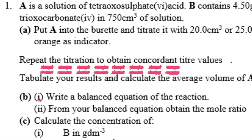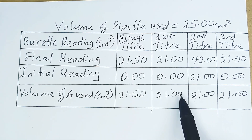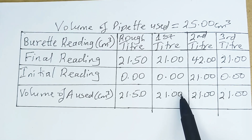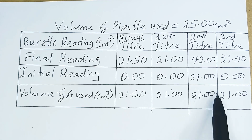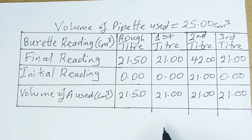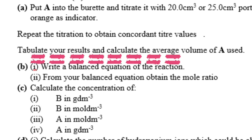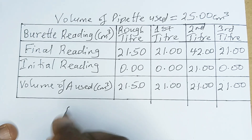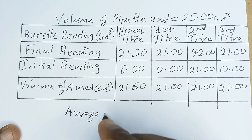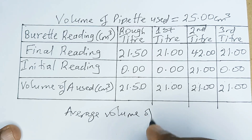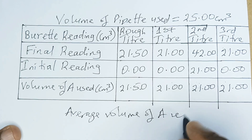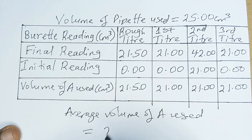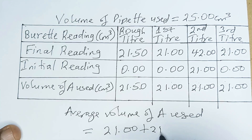The reason you must make them the same is this: look at the question — they say repeat the titration to obtain concordant titre values. They don't care even if you do the titration 40 times until you get the same results — consistent and concordant means the same result. You can get the same result; we don't penalize one mark for that. The question says tabulate your result and calculate the average volume of A used. We have tabulated already; this is how to tabulate your result.